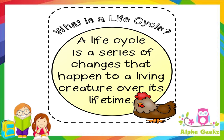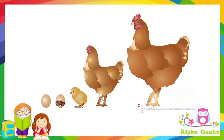Now let's see what is a life cycle. A life cycle is a series of changes that happen to a living creature over its lifetime. The sequential stages of development that occur in the life of an organism, starting from the egg or young one to a mature adult, are termed as the life cycle of that animal.